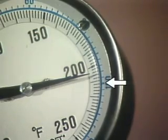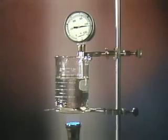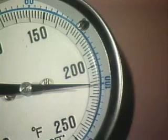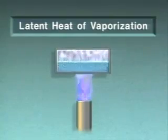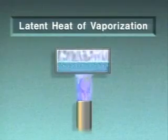As we continue to heat the water, its temperature approaches 212 degrees Fahrenheit, and bubbles form in the water. When the temperature of the water reaches 212 degrees Fahrenheit, it stops rising and the water boils. Heat transfer is still taking place, and a phase change is occurring — the water is turning into steam. The heat that is transferred when temperature does not change but a phase change occurs is called latent heat. The heat required to completely change a liquid to a vapor at a certain temperature and pressure is referred to as the latent heat of vaporization.